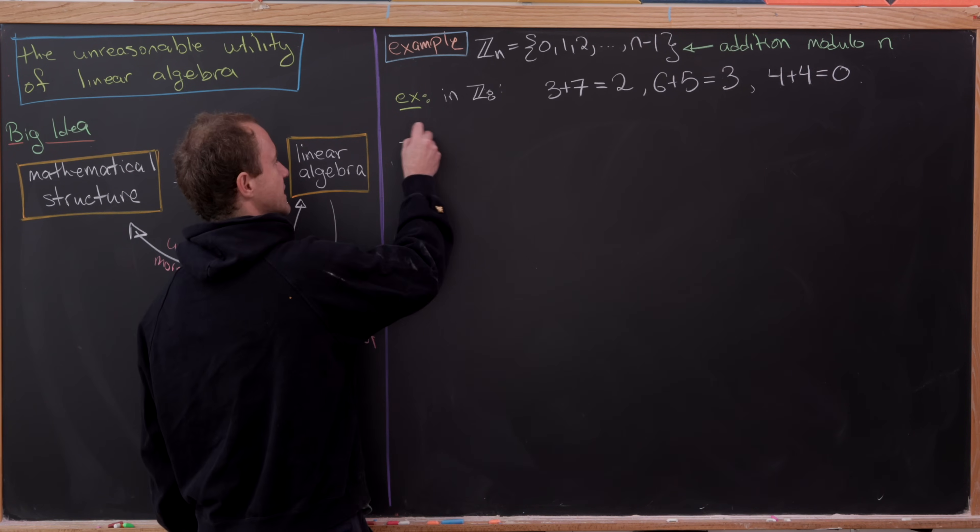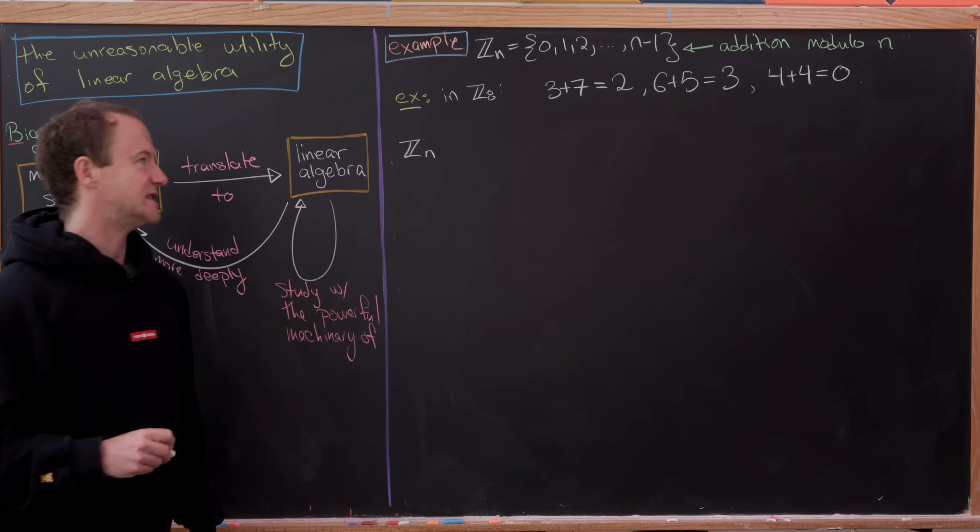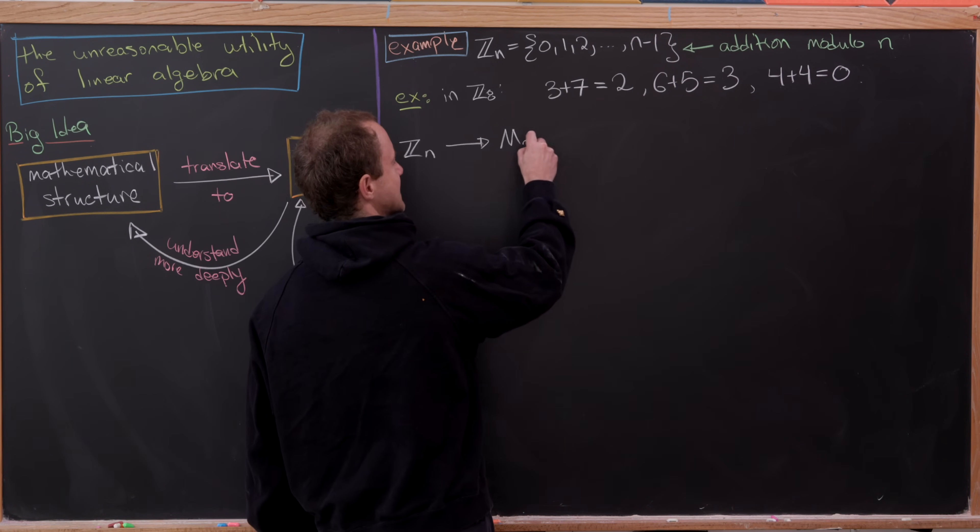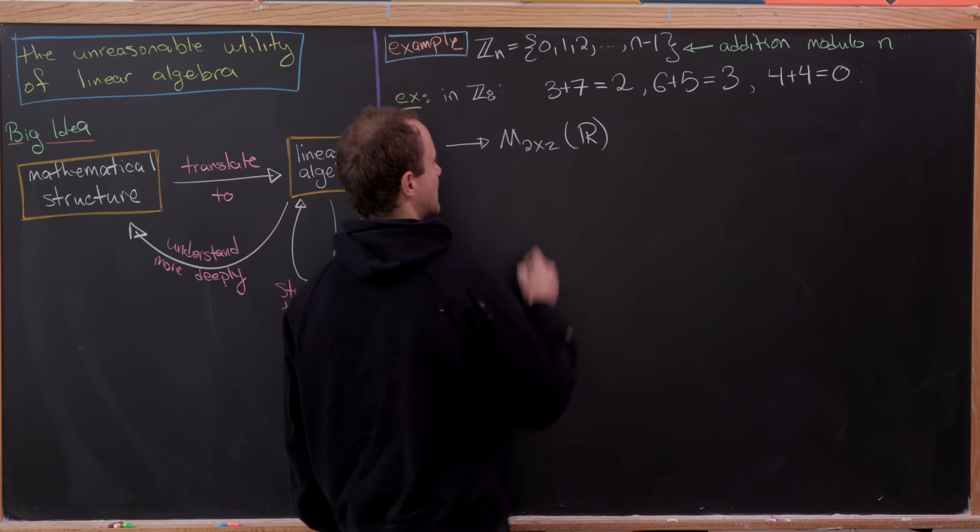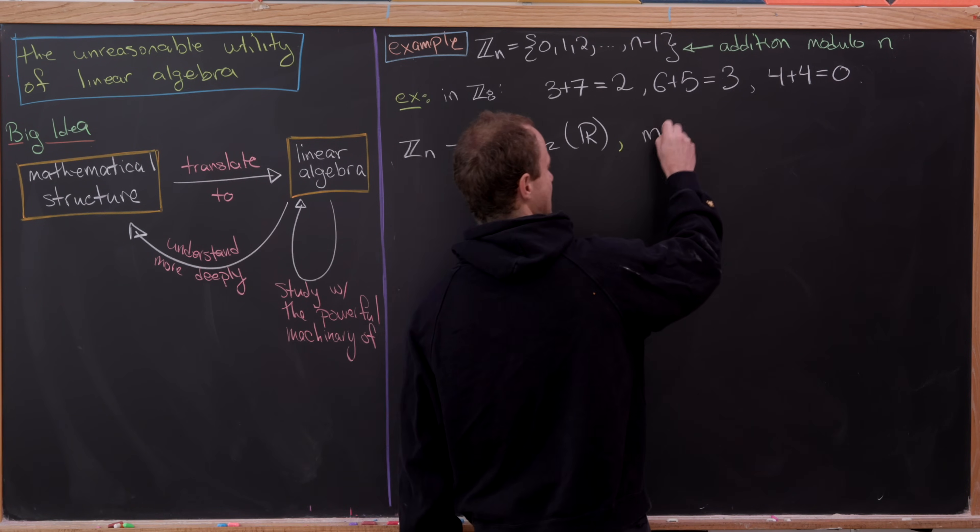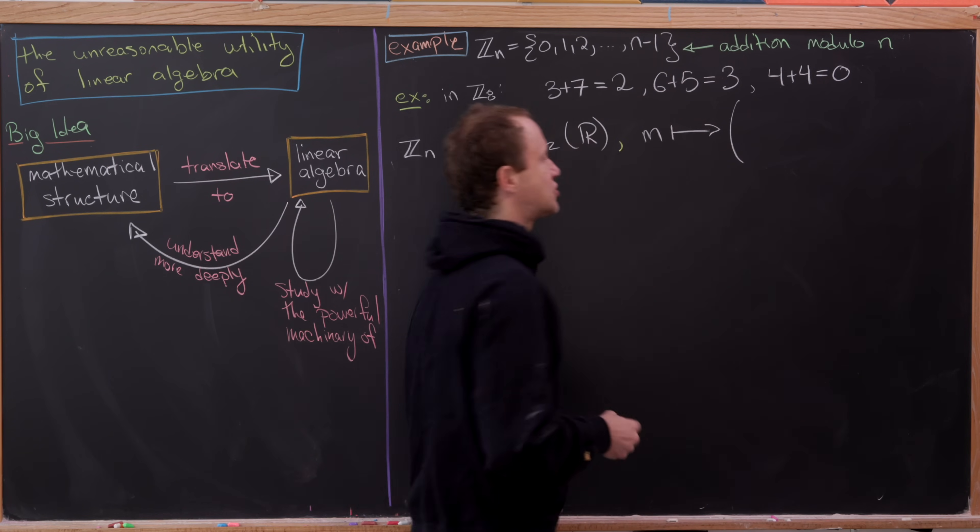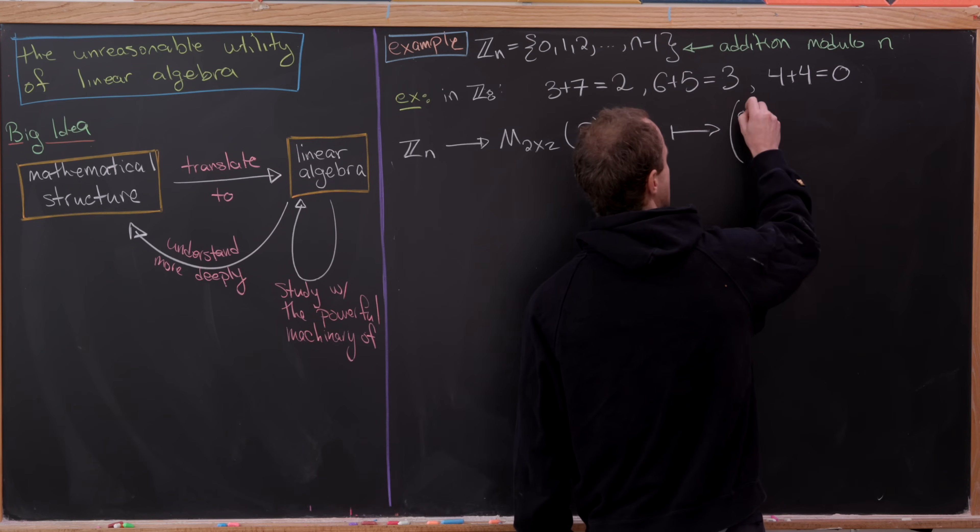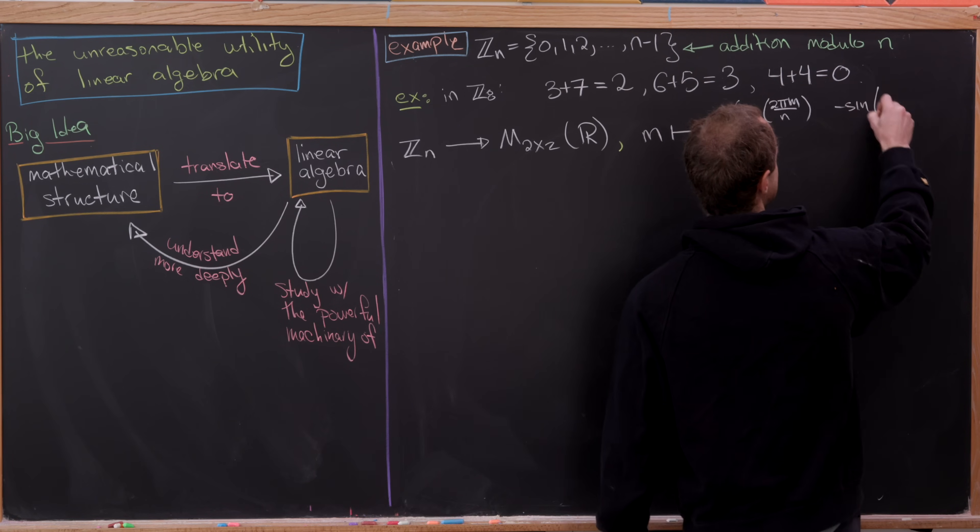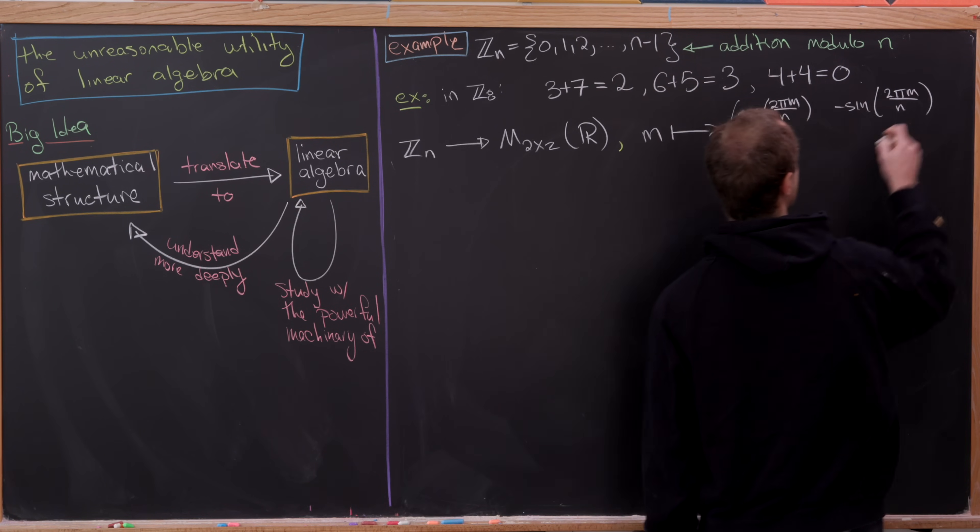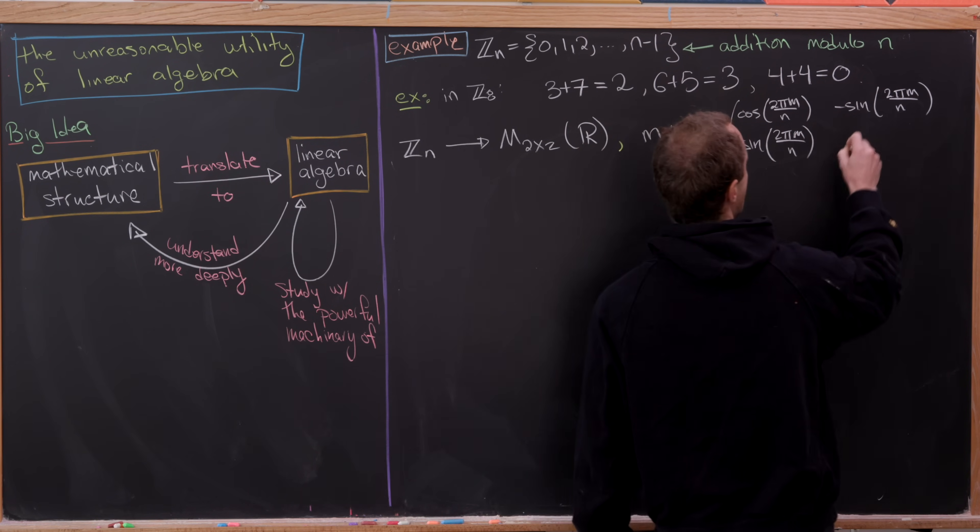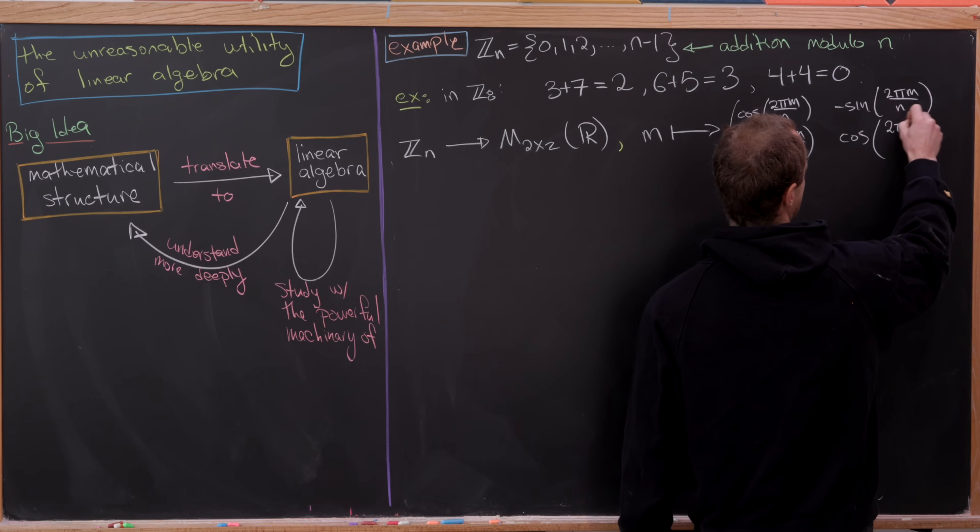But now what we'd like to do is somehow take elements of Z_n and write them as matrices. And here's how we can do it. We can, in fact, write these as 2 by 2 matrices with real entries. And the assignment goes like this. We'll take the number m, and we'll assign it to the following 2 by 2 matrix. So, it'll be cosine of 2 pi m over n, and then minus sine of 2 pi m over n. And then down here, we'll have sine of 2 pi m over n. And then here, we'll have cosine of 2 pi m over n.